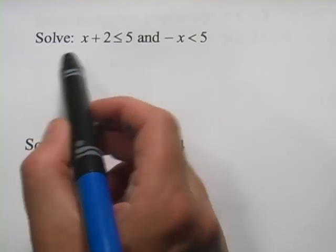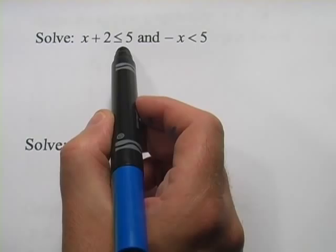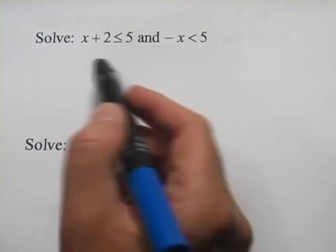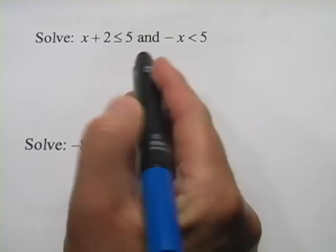Let's take a look at this first one. It says solve x plus 2 is less than or equal to 5 and negative x is less than 5. So the first step is just to solve each of these on their own.